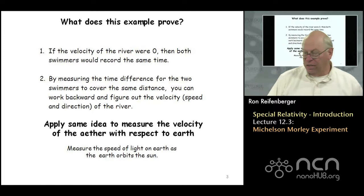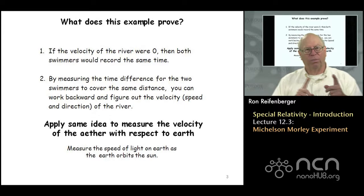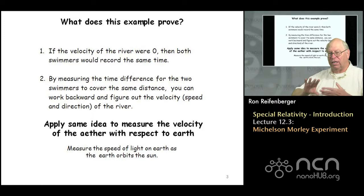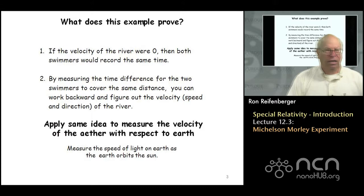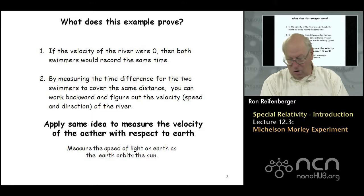What this simple swimming example proves is: first, if the velocity of the river were zero, both swimmers would record the same time. More importantly, by measuring the time difference between the two swimmers, you can actually work backwards and figure out the velocity of the river — how fast it's drifting and in what direction. These ideas apply in a very nice way to measuring the velocity of the ether with respect to the earth, by precisely measuring the speed of light as it moves in different directions through the ether.